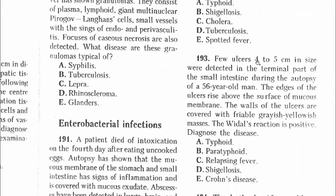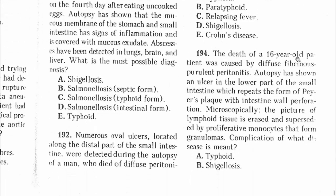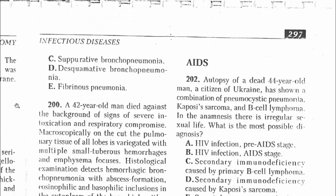Question 193: A few ulcers 4-5 cm in size were detected in the terminal part of the intestine — think of typhoid fever. The answer is A. Question 194: Death of a 16-year-old patient was caused by diffuse fibrinopurulent peritonitis. Autopsy showed an ulcer in the lower part of the small intestine representing a form of folliculitis with intestinal wall perforation — again typhoid fever. The answer is A.